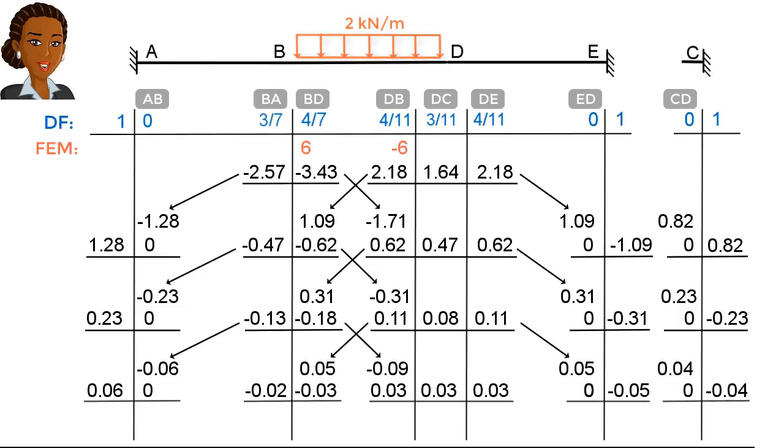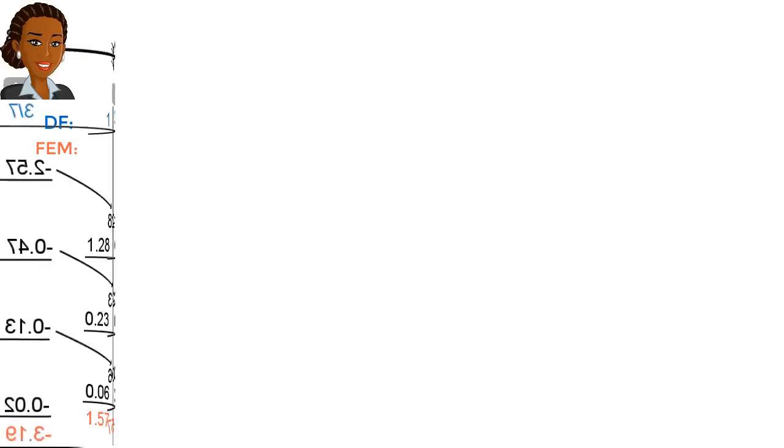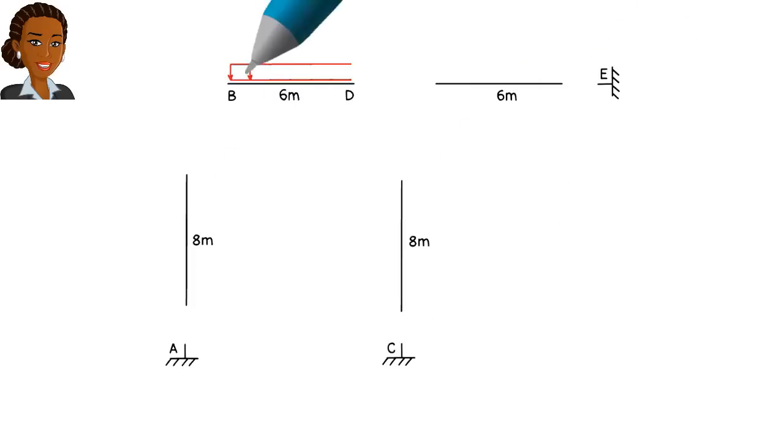Once we reach the end of the process, we add up the values in each column to get the member end moments. We can then calculate the member end shear forces and support reactions.